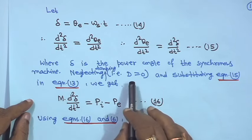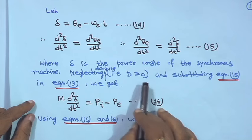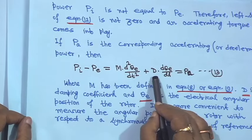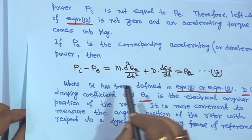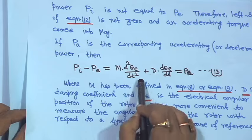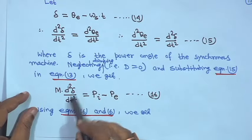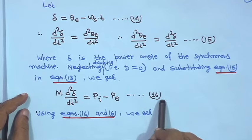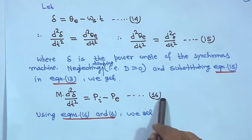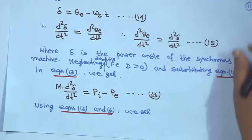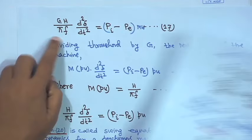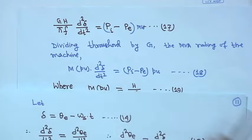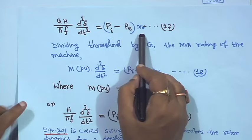Neglecting damping (D = 0) and substituting equation 15 into equation 13, replacing d²θ_e/dt² with d²δ/dt², the equation becomes: M × (d²δ/dt²) = P_i − P_e. Using equation 6, where M = GH / (πf), substituting and putting in the equation: (GH/πf) × (d²δ/dt²) = P_i − P_e in mega watts.